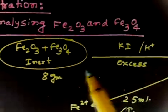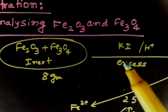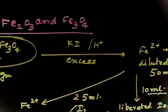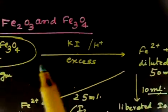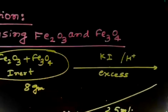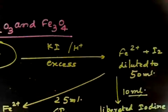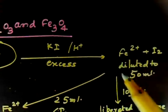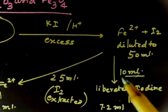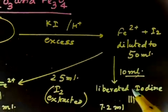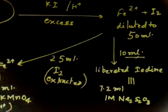What we are doing is we are treating this sample in the presence of acid with excess of KI. The iodine is liberated and all of the iron forms Fe²⁺. So we have two things happening: all iron goes to Fe²⁺ and I⁻ goes to I₂. This solution is diluted to 50 ml, and 10 ml of solution is taken. The iodine in the 10 ml solution is titrated by 7.2 ml of 1 M Na₂S₂O₃ solution.